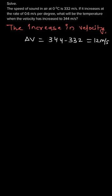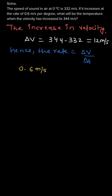The rate of increase in velocity is given as ΔV/ΔT — that is, the rate of change of velocity with respect to temperature — and that is given as 0.6 meters per second per degree Celsius. So ΔV equals 12 meters per second, and ΔT is the change in temperature.